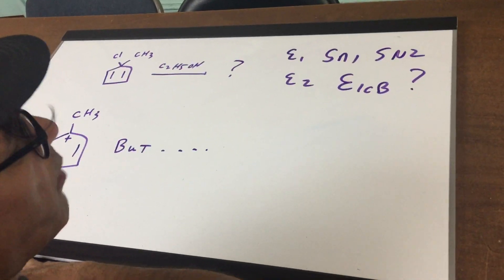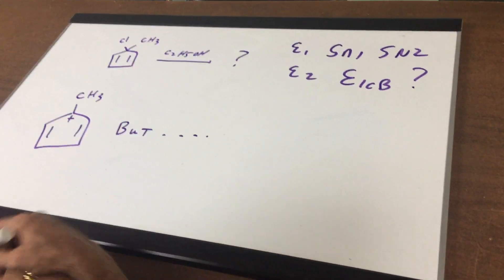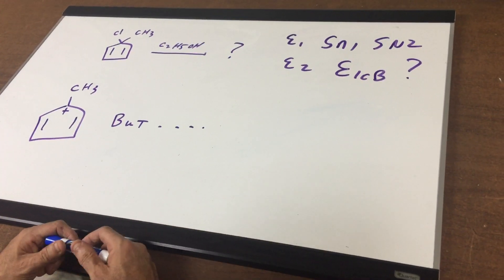Second, it's a tertiary. There's no way you're gonna do an SN2 on a tertiary, so that's out. So the only possible mechanism could be an SN1.